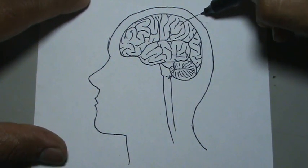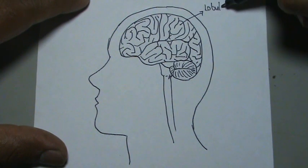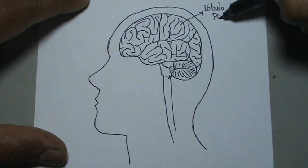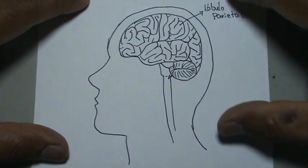Después de este dibujo entonces vamos a ubicar las partes. Está acá arriba el lóbulo parietal.